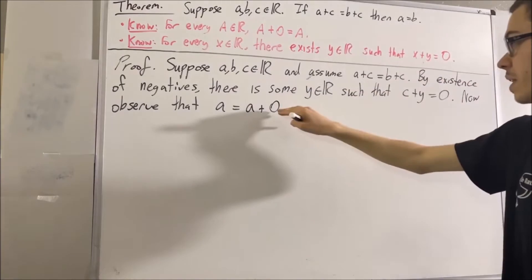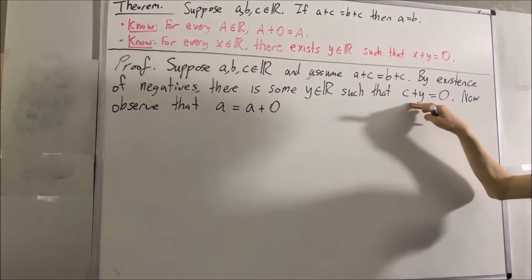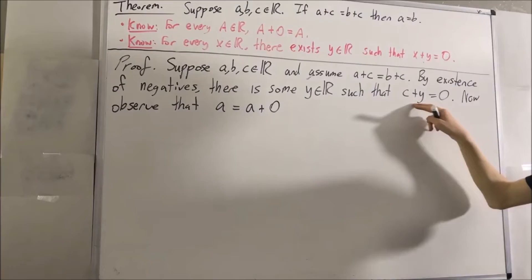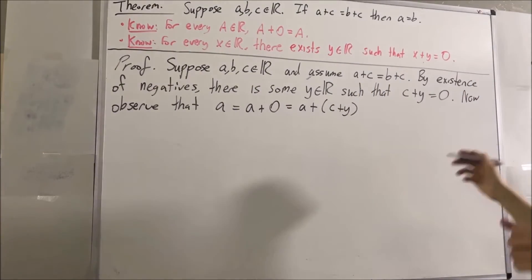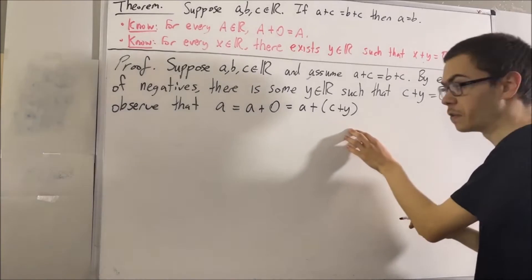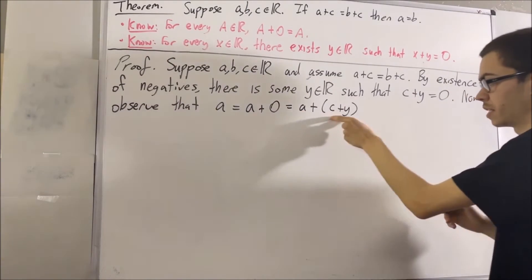Second of all, we know that 0 is equal to C plus Y, so we can replace the 0 here with C plus Y. And if you recall, another one of our field properties was the associative property of addition. We can move the parentheses around the A plus C.